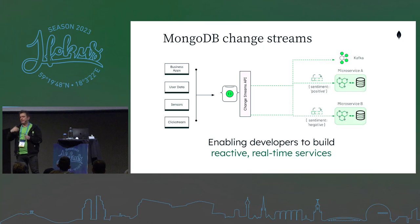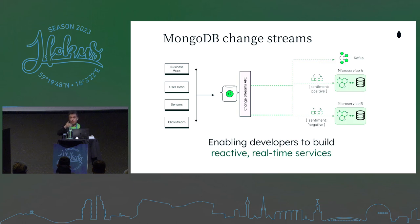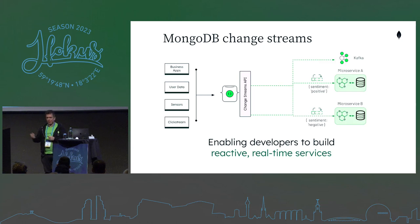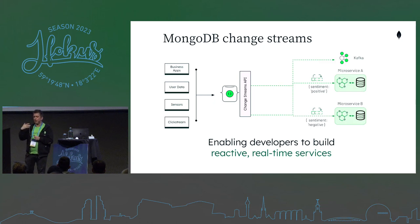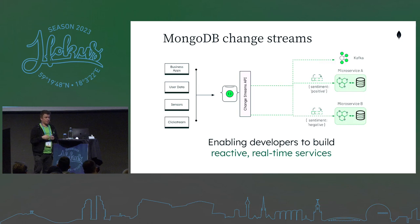In this example we have two microservices: one is listening to positive sentiment and the other to negative — this is what I'll also showcase in the demo. We can also support Kafka, so MongoDB change streams can publish every change that happens in a document to a Kafka topic, and then you can subscribe to that Kafka topic, or the other way around — listen to a Kafka topic and ingest that into MongoDB.